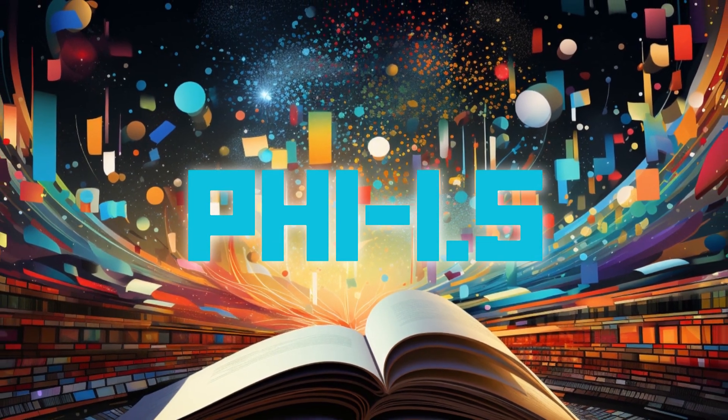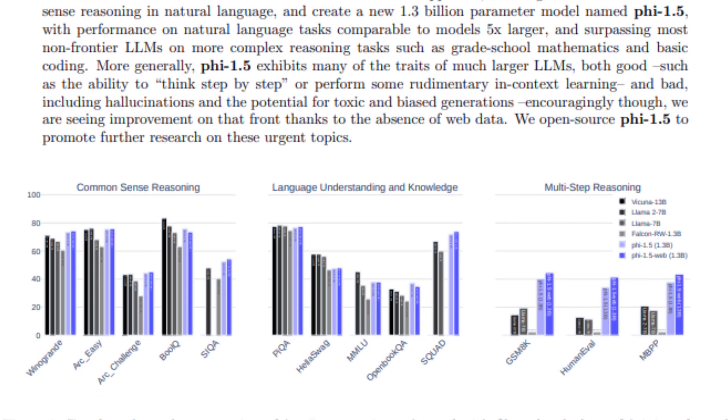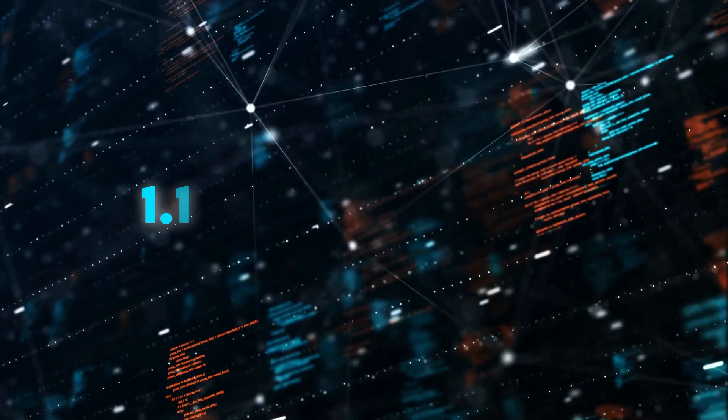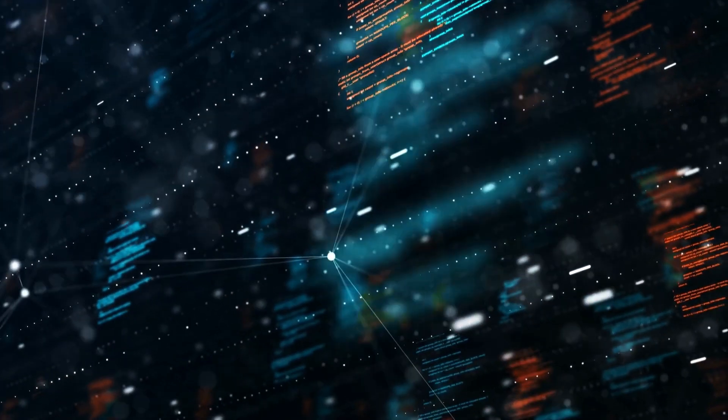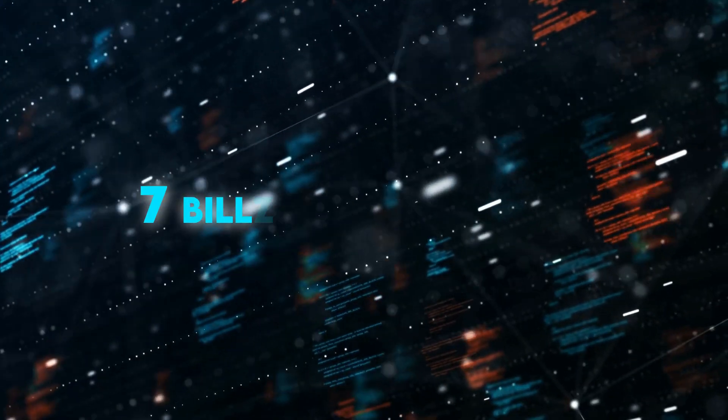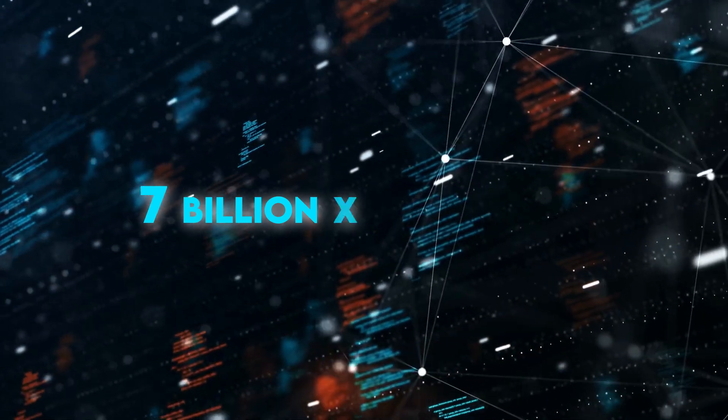PHI 1.5 is a small-scale language model designed by Microsoft that somehow outperforms larger-scale models. With only 1.3 billion parameters, it's surprisingly scored better than other language models which have over 7 billion to 10 billion tokens on multiple benchmark tests.